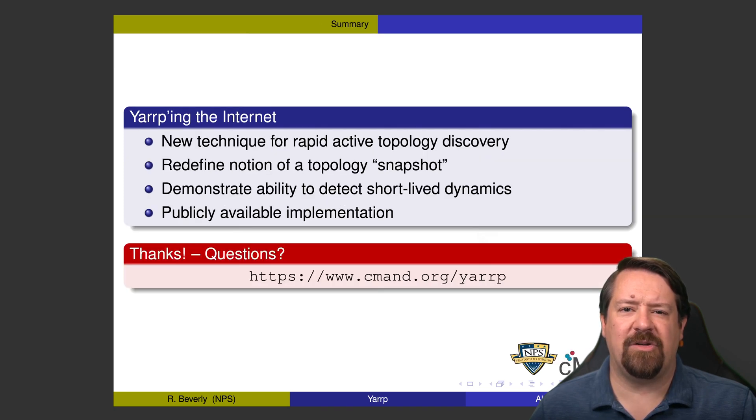You can find more information at cman.org or by searching for YARP on GitHub. Thanks, that's all for now — we'll see you on the next one.